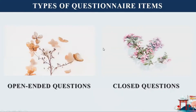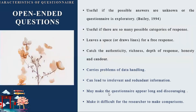Next is the type of questionnaire items, or the characteristics of questionnaire. The first is open-ended questions and the second is closed questions. Open-ended questions, according to Bailey (1994), are useful if the possible answers are unknown or the questionnaire is exploratory. They are also useful if there are so many possible categories of response. Open-ended questions leave a space or draw lines for a free response.